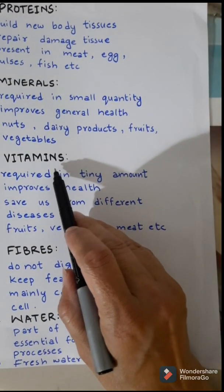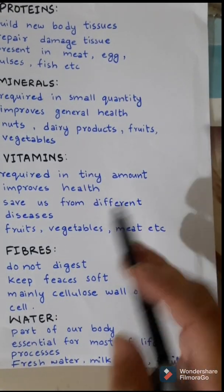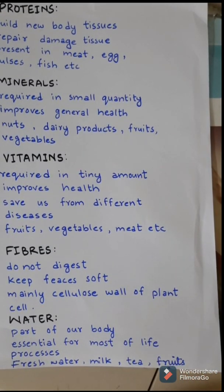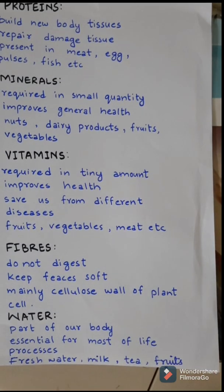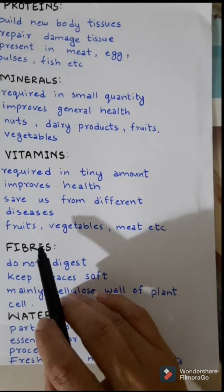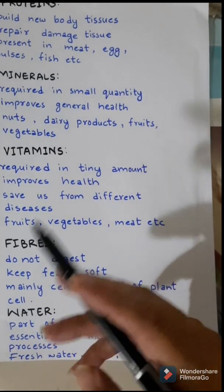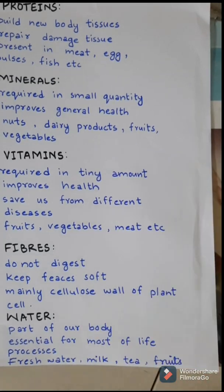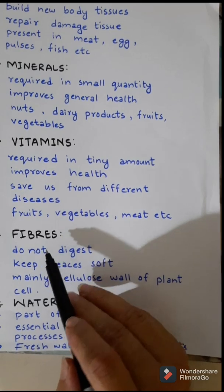Vitamins are organic compounds also required in tiny amounts. They improve our health and save us from different diseases. If we do not take vitamins, different types of diseases may occur in the body. They are present in fruits, vegetables, meat, etc. If you are not taking fruits and vegetables, there will be a lack of vitamins and you may become ill — this type of illness is known as deficiency diseases.